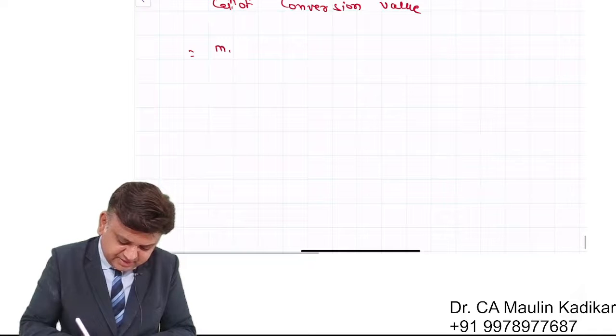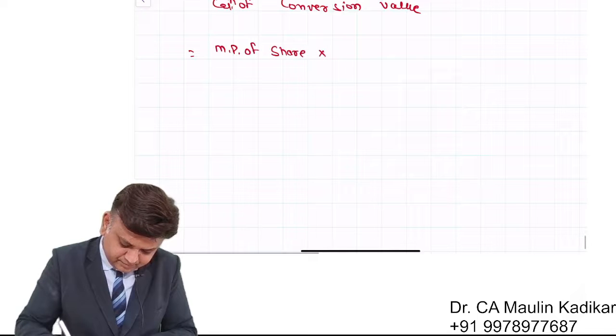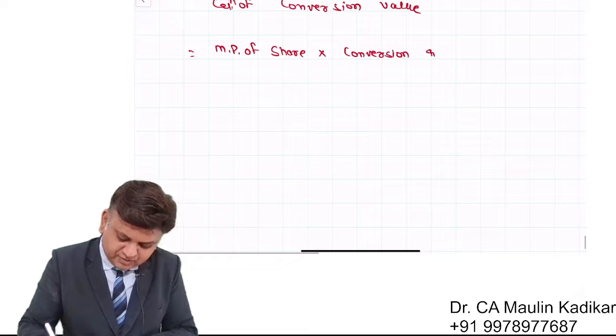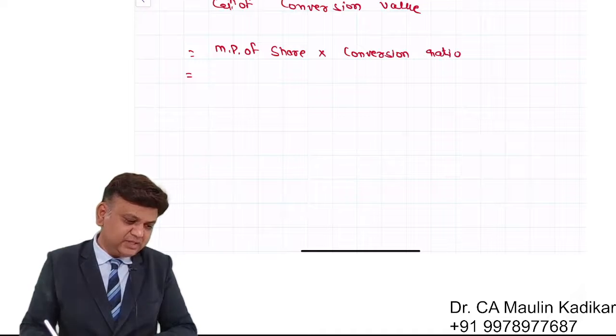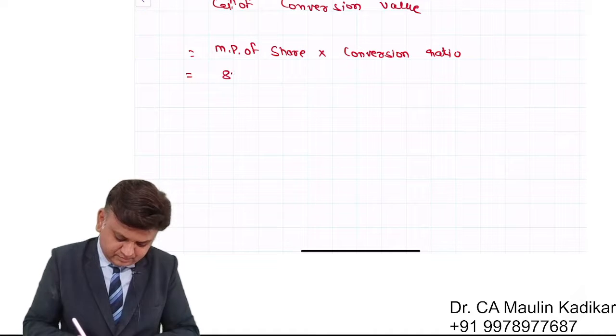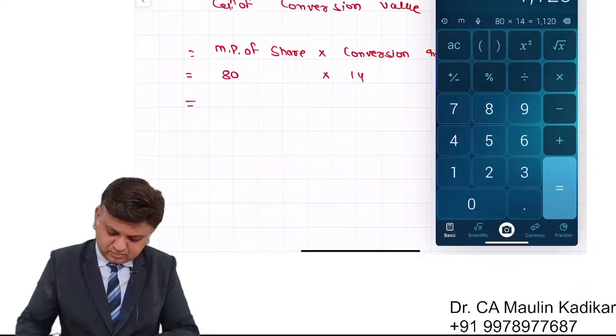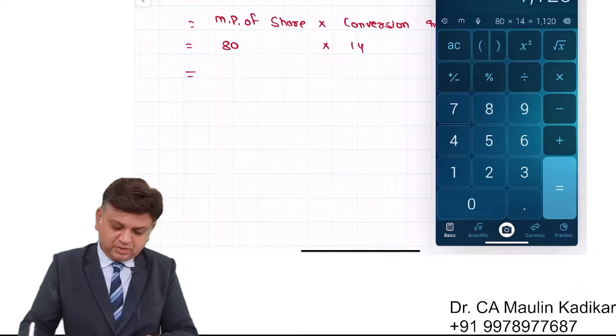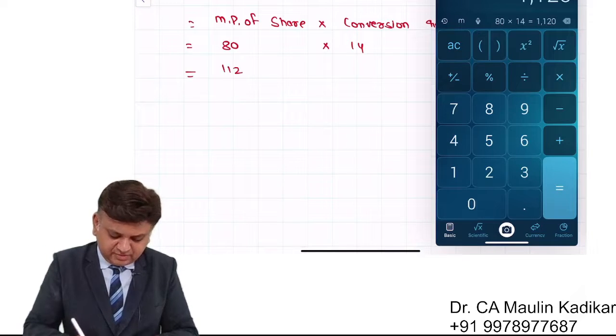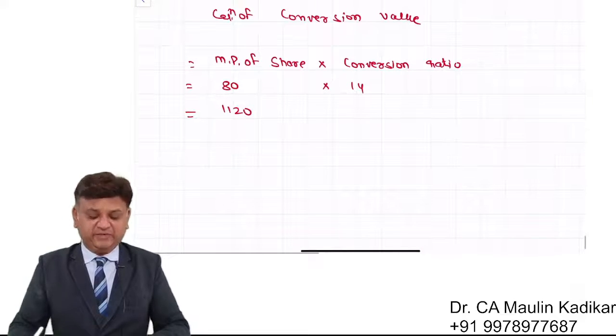What is the market price of share into conversion ratio? Equity share market price is 80, conversion ratio is 14, so the conversion value is 1120. That is the way the conversion value is calculated.